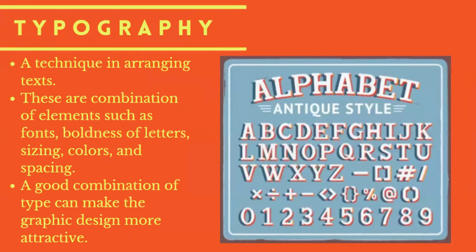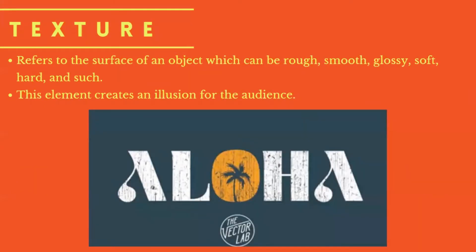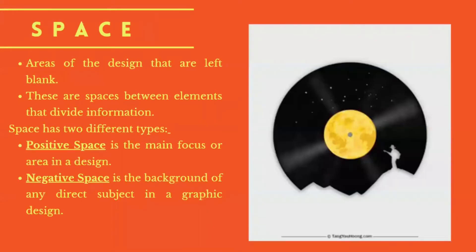The fifth element is typography, a technique in arranging the style of your text. Designers usually combine different fonts, sizes, colors, and spaces of letters to find the applicable design for the concept. The sixth element is texture, which refers to the surface of the design itself, which can be rough, smooth, glossy, soft, hard, and such. This element usually gives the audience some illusion. The last element is space — these are areas that are left blank on the design. Space has two types: positive space, which is the main focus of the design, and negative space, the background of any direct subject in the design.